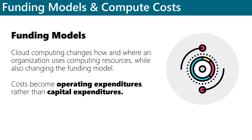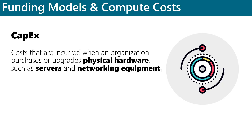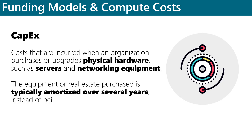Capital expenditures, which are referred to as CAPEX, are costs that are incurred when an organization purchases or upgrades physical hardware, such as servers and networking equipment. CAPEX also includes things like data centers and office buildings. When a CAPEX purchase is made, the equipment or real estate purchased is typically amortized over several years instead of being deducted in full in the first year.